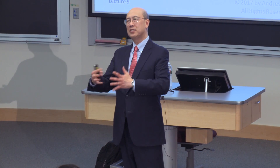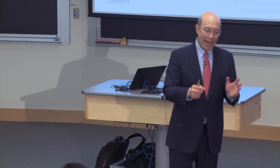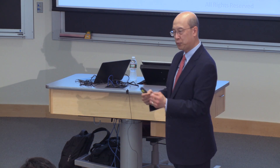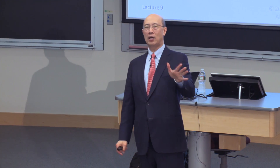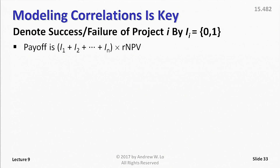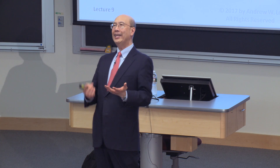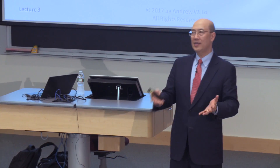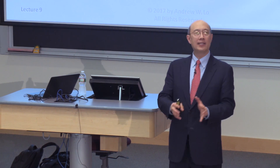I'm going to develop a specific mathematical model of correlations, starting with success or failure. I'll use an indicator variable — capital I subscript little i — to indicate the success or failure of a single drug development project. One means success; zero means failure. The basic idea behind a megafund simulation is nothing more than counting up the number of successes and multiplying that by your risk-adjusted NPV. You can be more sophisticated using different projects with different kinds of cancer and different patient populations, but the basic calculation is just this. What we need is the distribution of the sum of the successes.